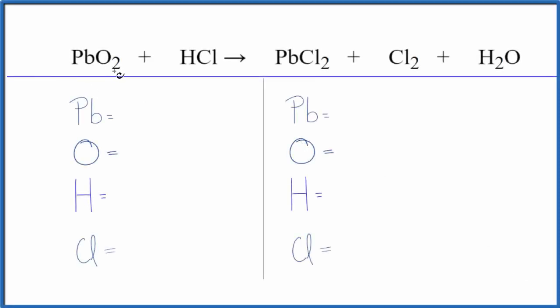In this equation we have PbO2 plus HCl. This is lead dioxide plus hydrochloric acid. Let's count the atoms up and balance the equation.